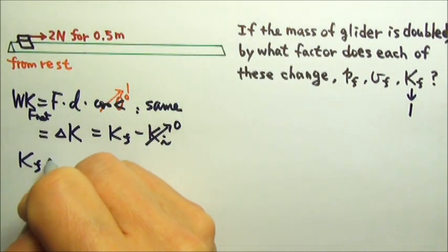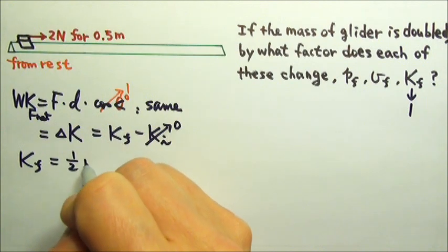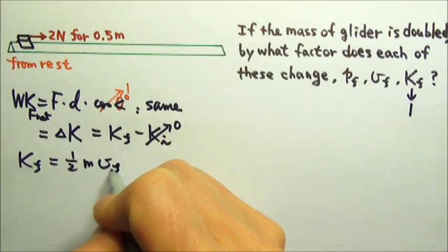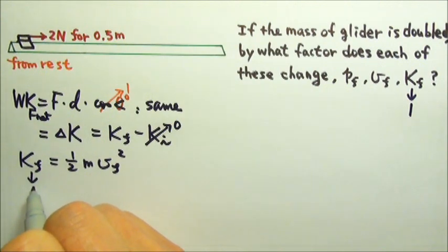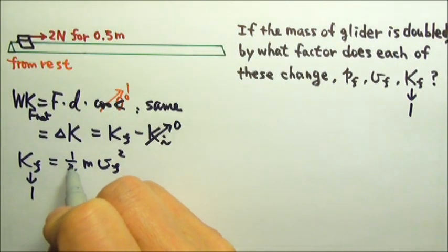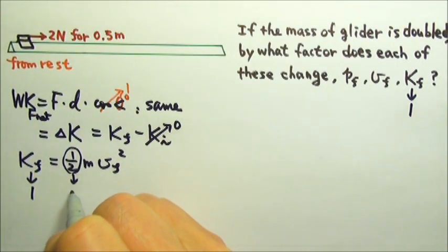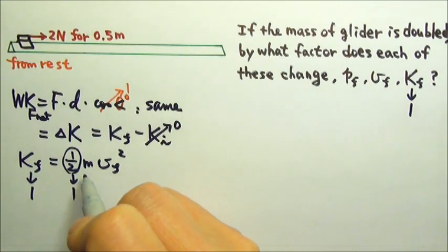And what is the final kinetic energy? It is ½mv_final². The kinetic energy changes by a factor of 1. ½ is a constant, so it also changes by a factor of 1.